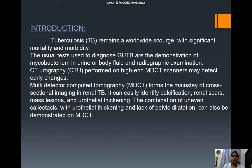Tuberculosis remains a worldwide scourge with significant mortality and morbidity. The usual tests used to diagnose genitourinary tuberculosis are the demonstration of mycobacterium in urine or body fluid and radiographic examination. CT urography performed on high-end multi-detector CT scanners may detect early changes and forms the mainstay of cross-sectional imaging in renal tuberculosis. It can easily identify calcification, renal scars, mass lesions, and urothelial thickening. The combination of uneven caliectasis with urothelial thickening and lack of pelvic dilatation can also be demonstrated on multi-detector CT.